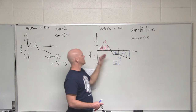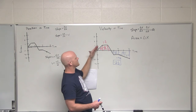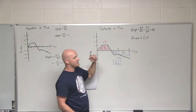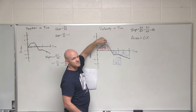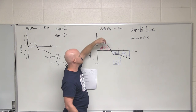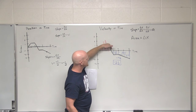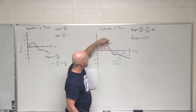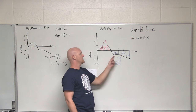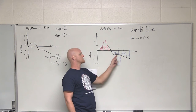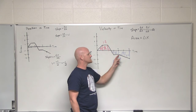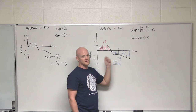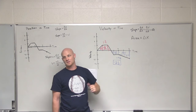Where is the acceleration positive, negative, or zero? Acceleration is the slope. There's an uphill slope from zero to one second — that's positive acceleration. No slope from one to two seconds — that's zero acceleration. A negative slope from two to three seconds — negative acceleration. Slope is zero from three to four seconds, then negative again from four to six seconds — negative acceleration.